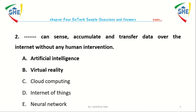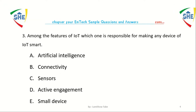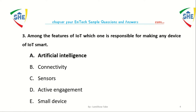Question number two: Dash concerns accumulate and transfer data over the internet without any human intervention. A. Artificial intelligence, B. Virtual reality, C. Cloud computing, D. Internet of Things, E. Neural network. Question number three: Among the features of Internet of Things, which one is responsible for making any IoT device smart? A. Artificial intelligence, B. Connectivity, C. Sensors, D. Active engagement, E. Small device.